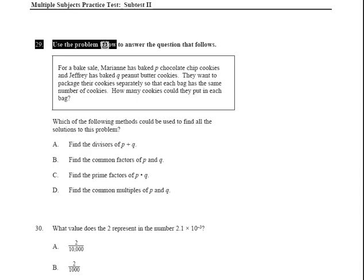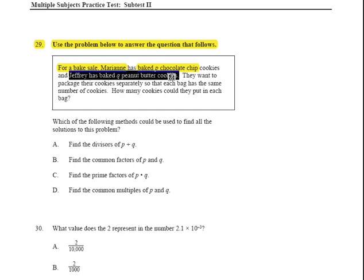Okay, this brings us to question 29, and this says, for a bake sale, Marianne has baked P chocolate chip cookies, and Jeffrey has baked Q peanut butter cookies. They want to package their cookies separately so that each bag has the same number of cookies. How many cookies could they put in each bag? All right,